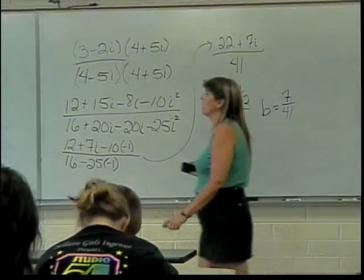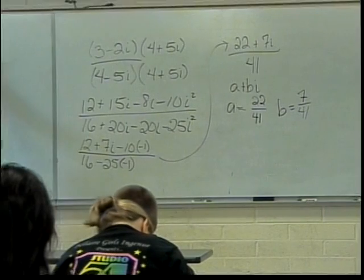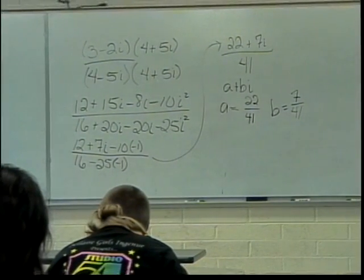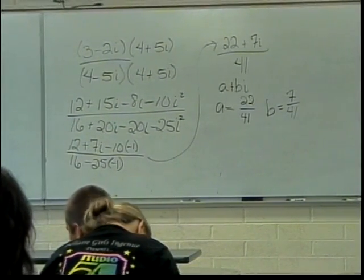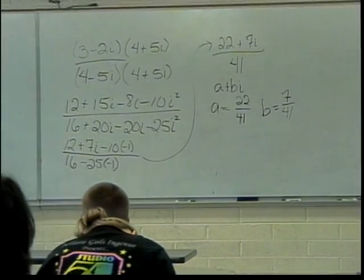Here is our first quadratic function, negative 3x squared plus 27x minus 24. That's my function. How do I know that's a quadratic function? What is it about it that makes it quadratic?